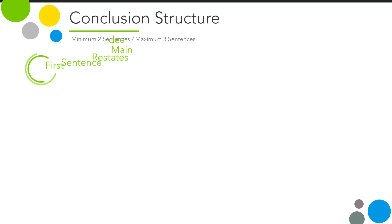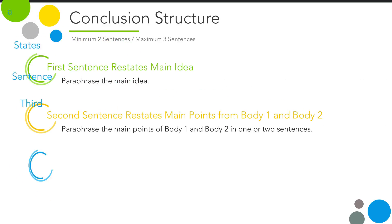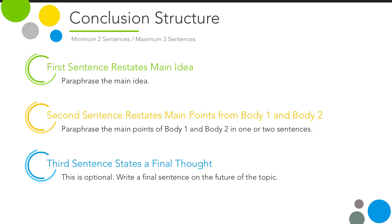Finally, the conclusion. We will write 3 sentences in the conclusion. First, state the main idea again — this is the second sentence in the introduction, so go back to that. Second, paraphrase the topic sentences in body 1 and body 2. No new information here; this is the conclusion and it is for review. Lastly, use the last sentence to talk about what you think will happen in the future — it doesn't really matter what you say, this is more for the word count.